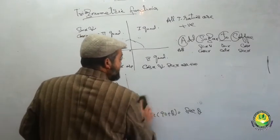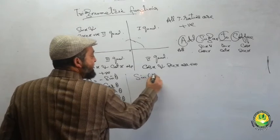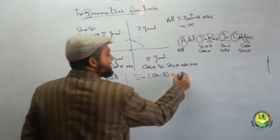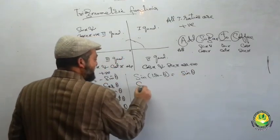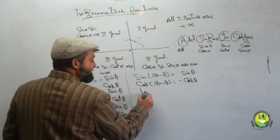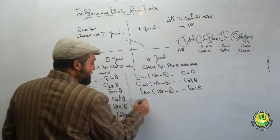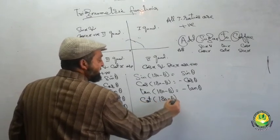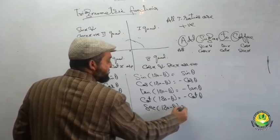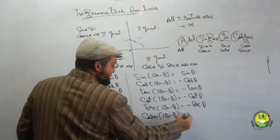For (180° − θ): this falls in the second quadrant. At 180°, function names do not change. sin(180° − θ) = sin θ. cos(180° − θ) = −cos θ. tan(180° − θ) = −tan θ. cot(180° − θ) = −cot θ. sec(180° − θ) = −sec θ. cosec(180° − θ) = cosec θ.